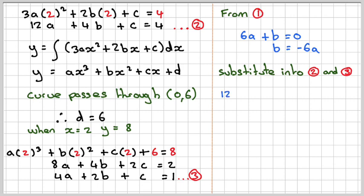Substituting into equation 2, we get 12a plus 4 times minus 6a plus c equals 4. 12 minus 24 gives minus 12a plus c equals 4. That's equation 4.